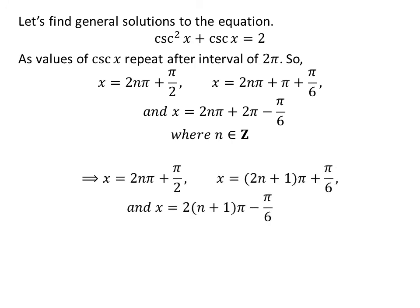Further simplification gives us the general solutions: 2nπ + π/2, (2n+1)π + π/6, and (2n+1)π minus π/6.